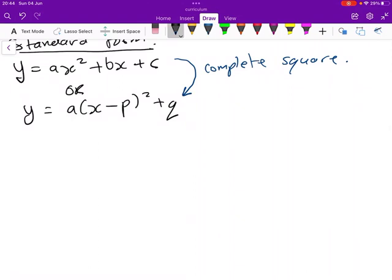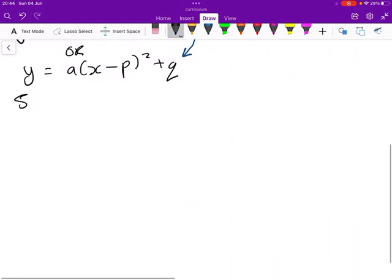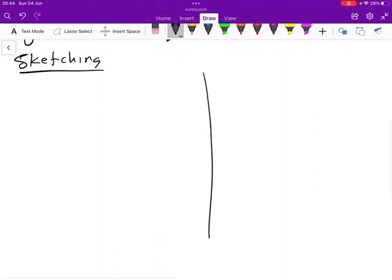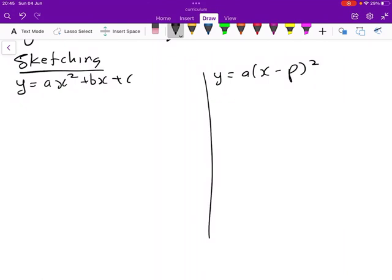Alright, so let us look at sketching. When we sketch, we want to look at two scenarios here. We're going to look at y equals to ax squared plus bx plus c. And on the other side, I will look at y equals to ax minus p squared plus q.